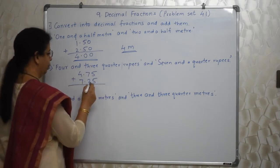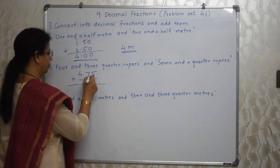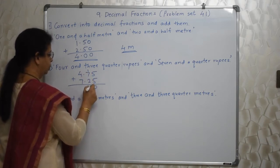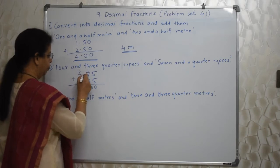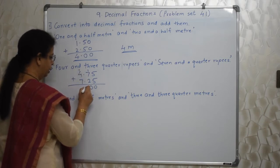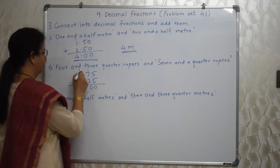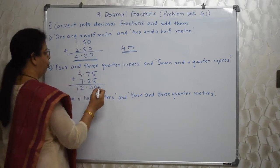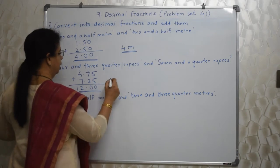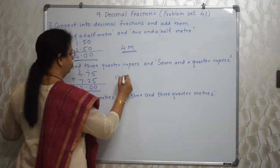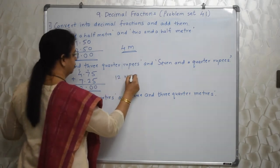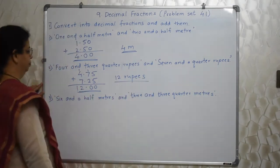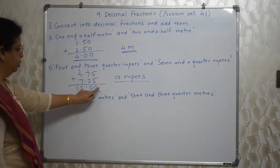Addition is very simple. 5 plus 5, 10. So 1 carry. 1 plus 7, 8. 8 plus 2, 10. So 1 carry. Point ke niche point. Decimal ke niche decimal. 1 plus 4, 5. 5 plus 7, 12. So 12.00 is the answer. It means 12 rupees, 0 paisi. So 12 rupees.